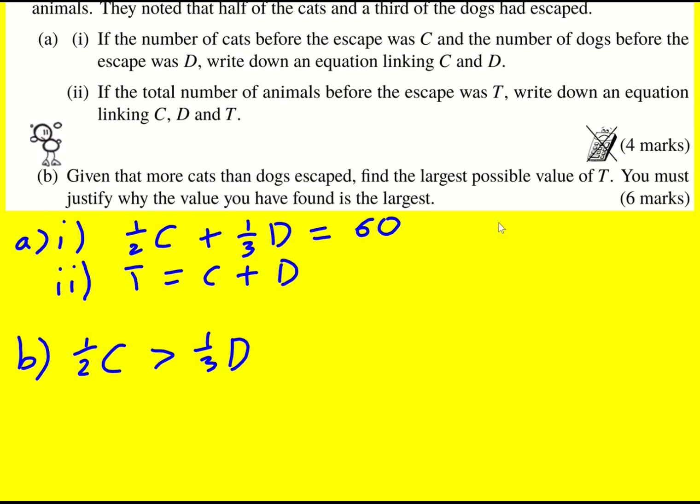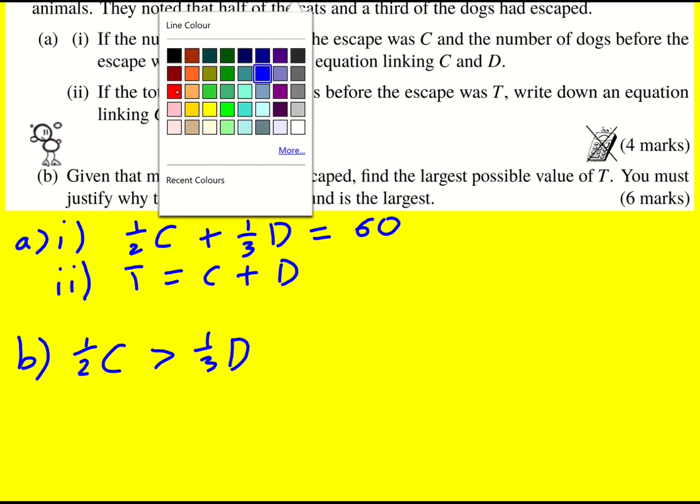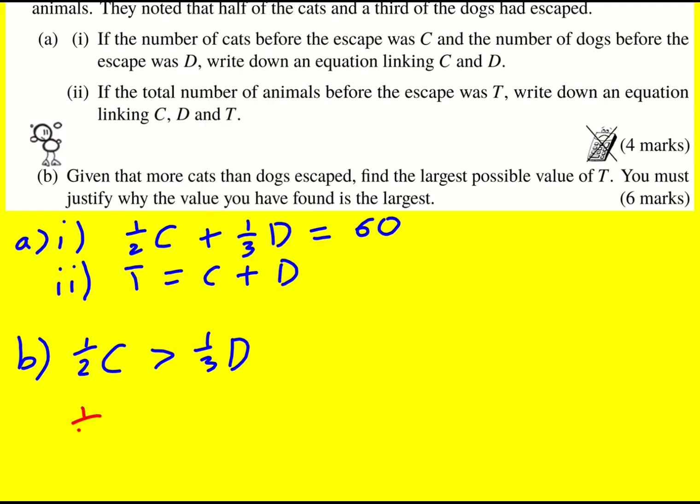Now I want to find the maximum value of T. Well, I have two equations here, and yes there's three unknowns, but I do have a relationship between C and D. So I'm going to replace one of them, either C by making C the subject here, or D. Let's make D the subject. So it's going to be that one-third D equals 60 minus one-half C, and therefore D, if I times through by 3, is 180 minus three-halves C.